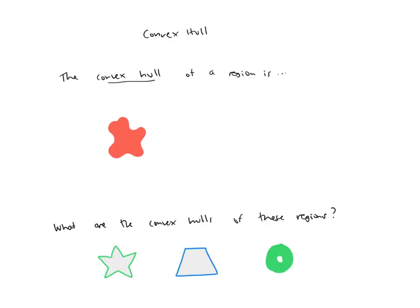The convex hull of a region is defined to be the smallest convex region that contains the original region. So for this region, its convex hull looks something like this.